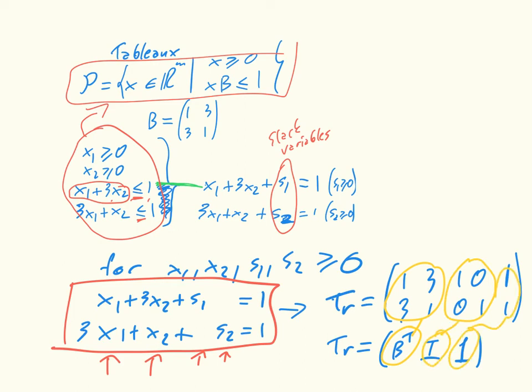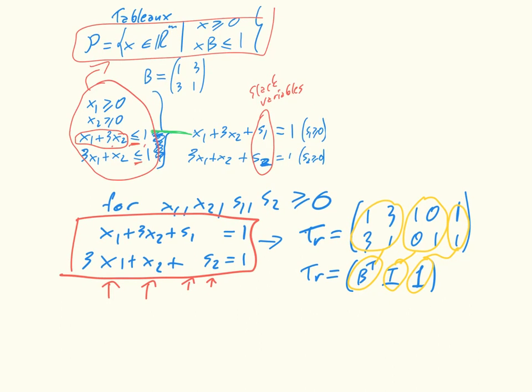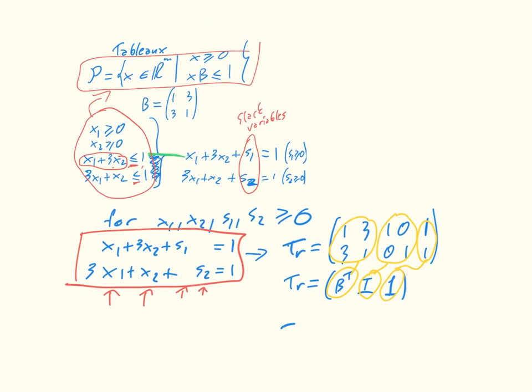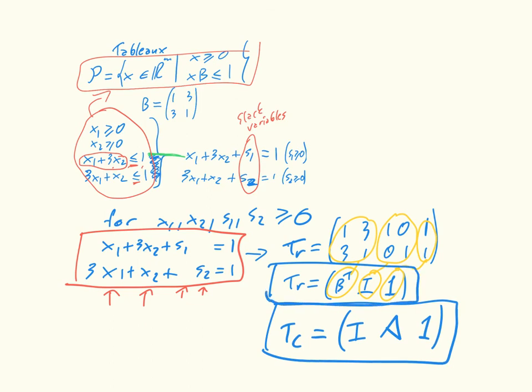And the equivalent for the column player is just Tc equals an identity matrix, the payoff matrix A, and a column of 1s. But we'll come to that later on.